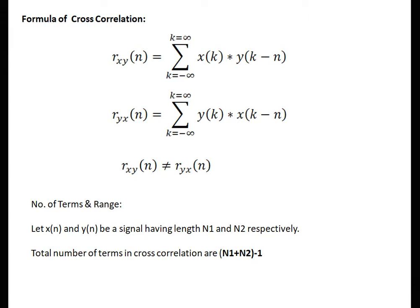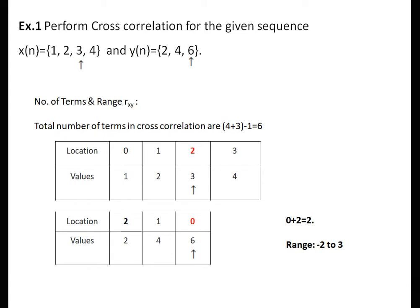Number of terms and range: let x(n) and y(n) be signals having length n1 and n2 respectively. The number of terms in the cross-correlation are the same as linear convolution, that is n1 plus n2 minus 1. To understand the range, we will solve a problem. Perform cross-correlation for the given sequence: x(n) = {1, 2, 3, 4} with signal moving from minus 2 to 1, and y(n) = {2, 4, 6} moving from minus 2 to 0.